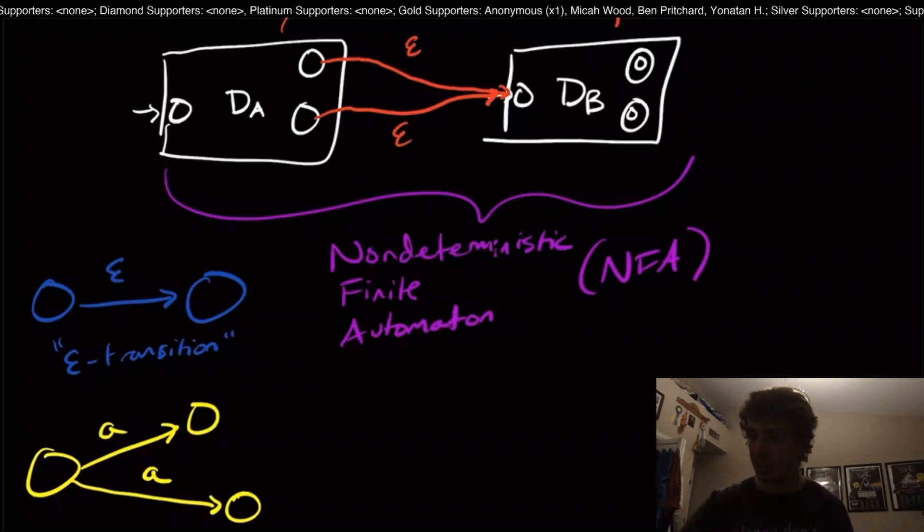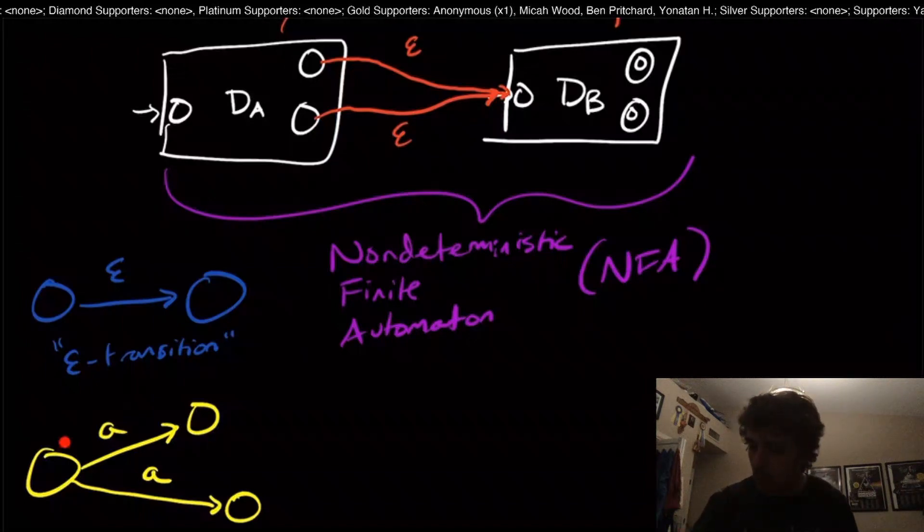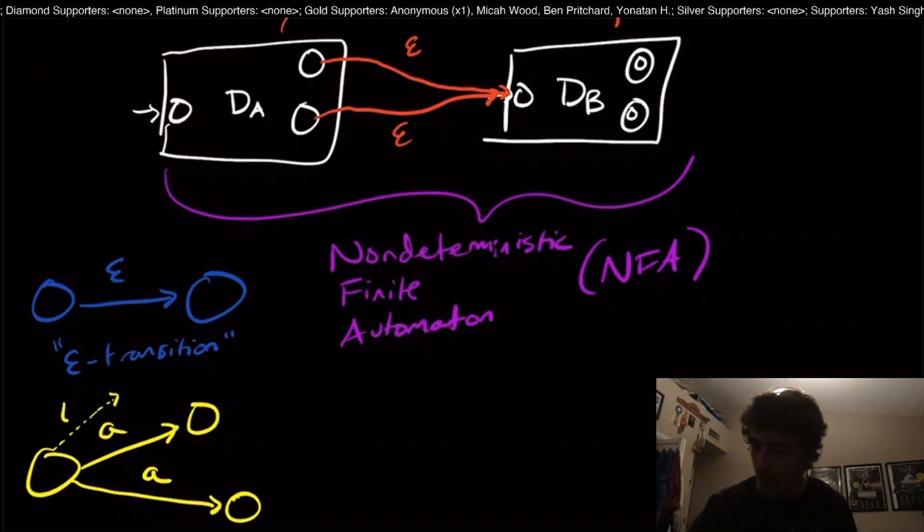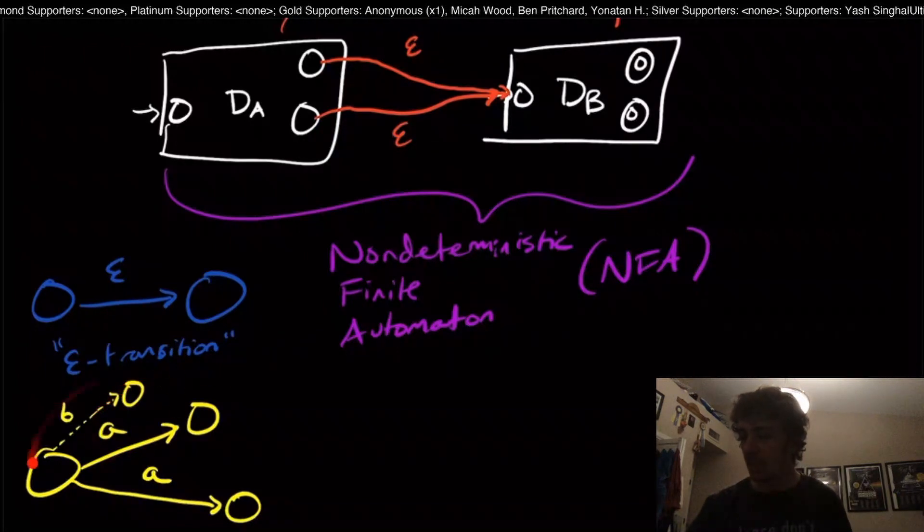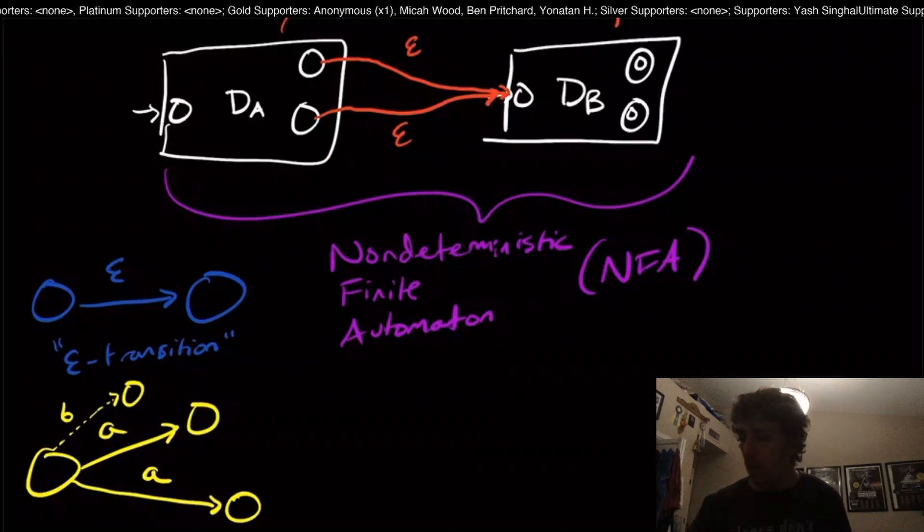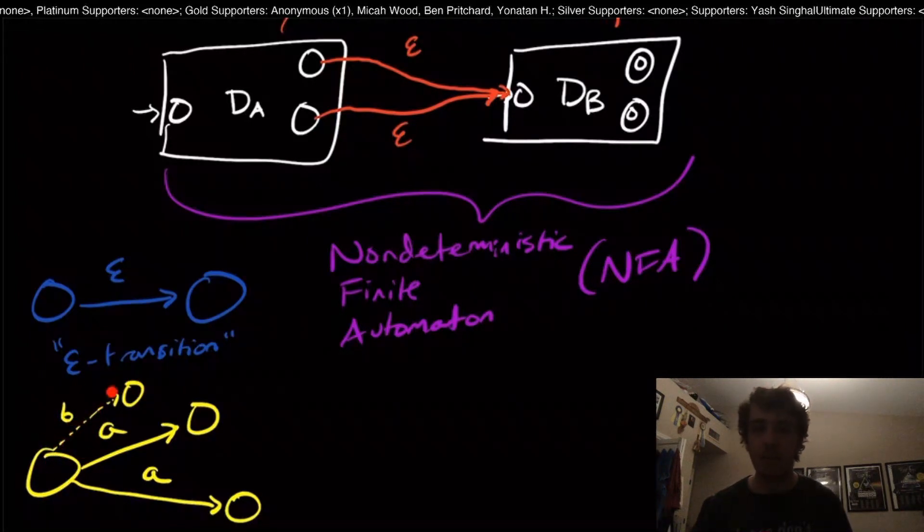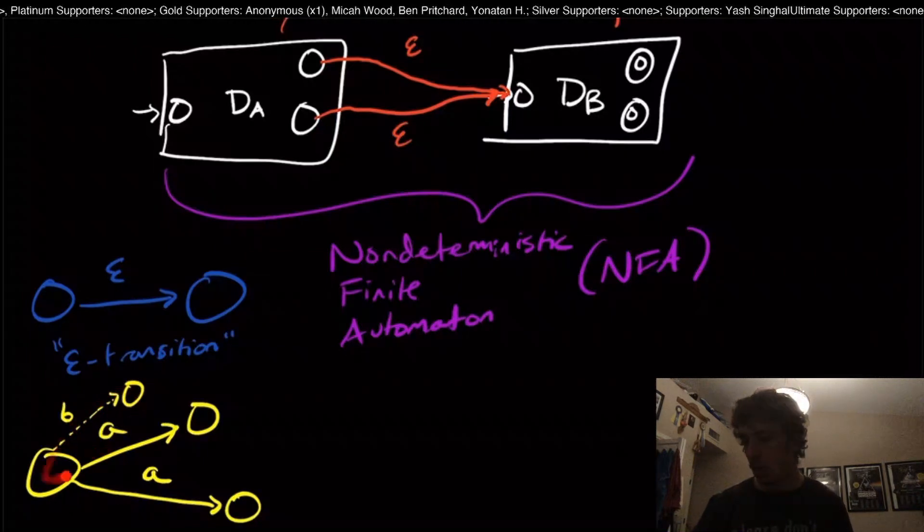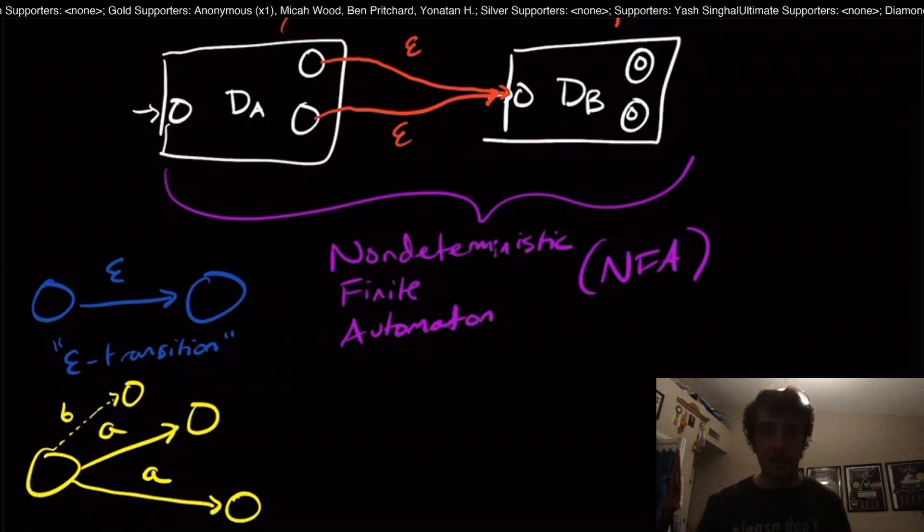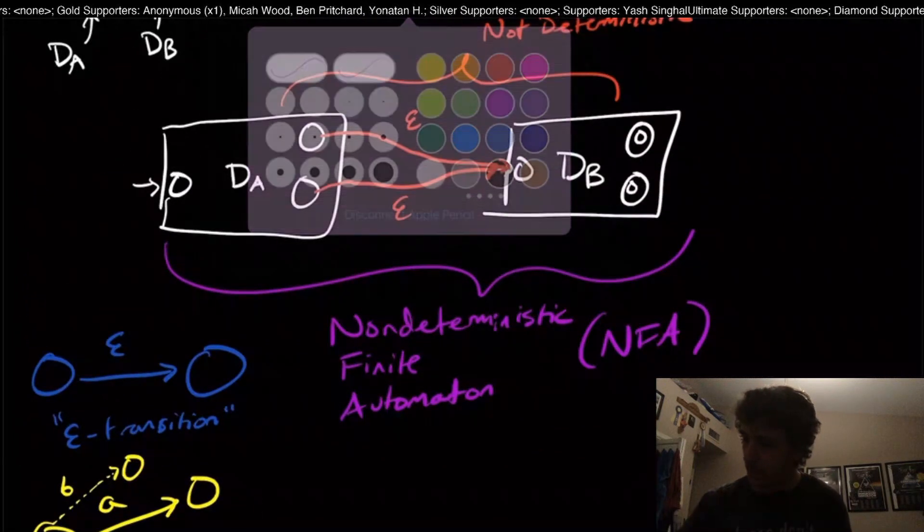We're allowed to have multiple transitions on the same symbol. We might as well just shoot the moon on this one. We could have some transitions just completely left out here. Because if we're trying to make something that's not deterministic, we might as well just throw away anything that we needed with deterministic before. We needed every single transition to be there for every state, but here we might as well just assume that we don't actually need all of that. That's actually quite interesting.